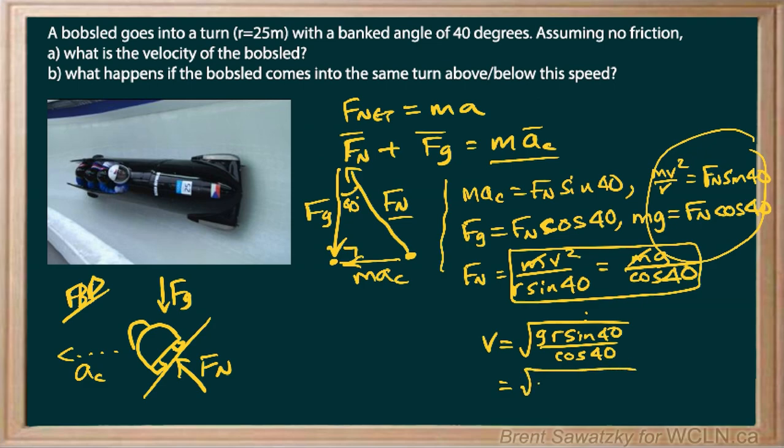And so we could fill in some numbers. And let's do that tan there. 9.8 for the g. The r is 25. And we can say tan 40. And plug that into our calculator. And we come up with, and don't forget to square root it, 14 meters per second.